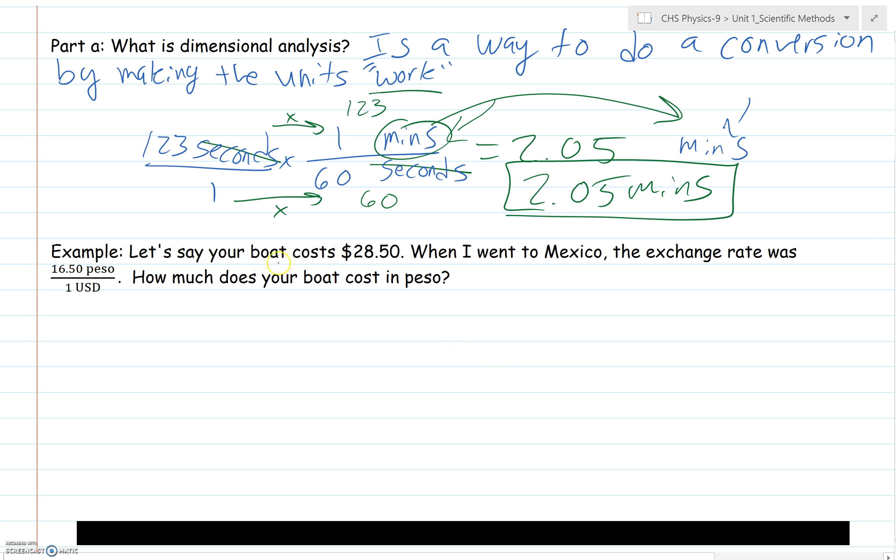Let's say your boat that you built for the build-the-boat activity costs $28.50. Not too expensive, not too cheap. When I went to Mexico, the exchange rate was 16.5 peso for one USD, meaning U.S. dollar. How much does your boat cost in pesos? First of all, just to make this clear, $28.50 is 28.5 USD. That means the same thing.